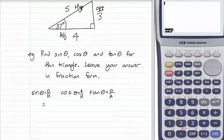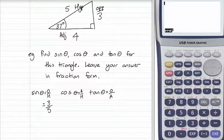Substitute in the opposite for sine. The opposite is 3 over the hypotenuse, which is 5. So sine theta equals 3 over 5.